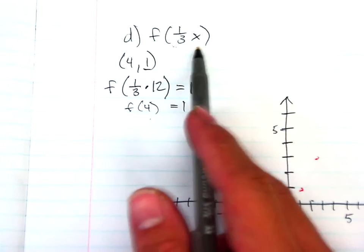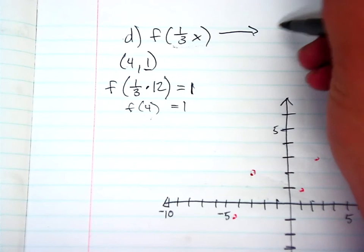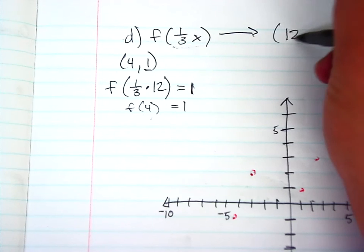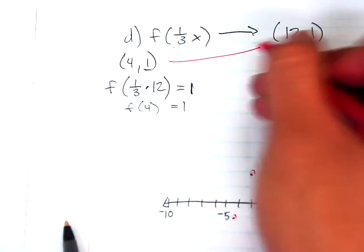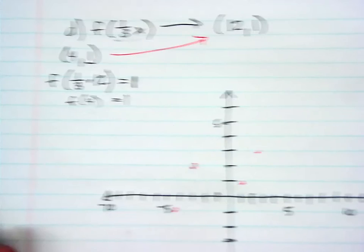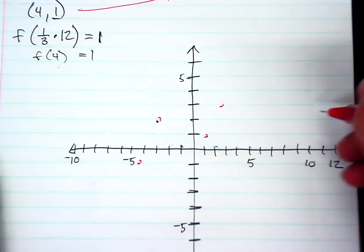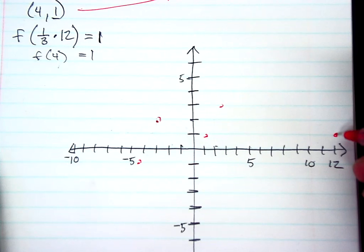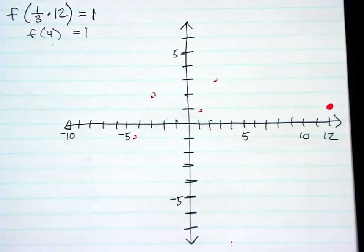So f(1/3 x) is actually telling us our new coordinate for (4, 1) will now be (12, 1). So (4, 1) is now this crazy (12, 1). And thus, my super big graph here. So let's go ahead and start off by plotting that point. First, we have (12, 1). Now, let's go ahead and use the space around here to figure out the rest of them.